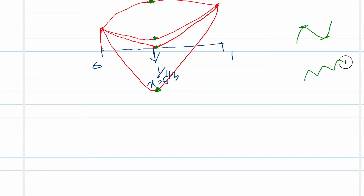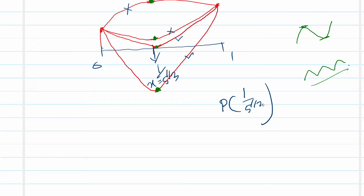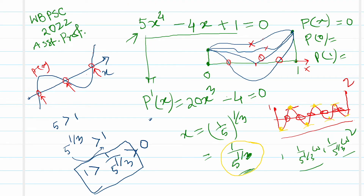In the first case there are no zeros; in the second there is one zero; in the third there are two zeros. We must check whether the value at the critical point is positive, zero, or negative. To determine this, we evaluate p((1/5)^(1/3)).